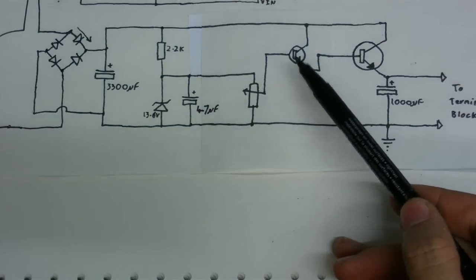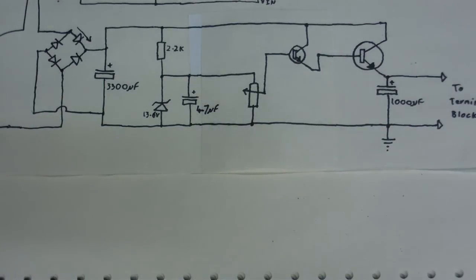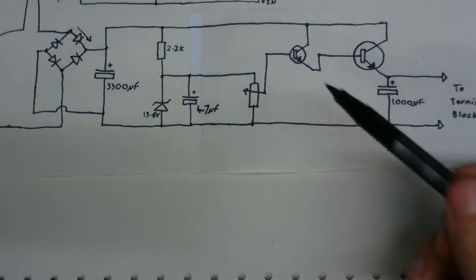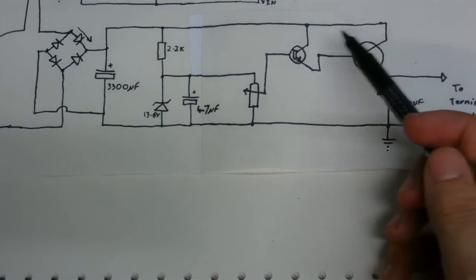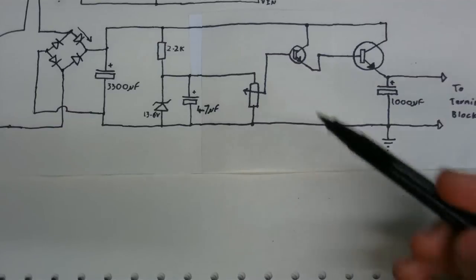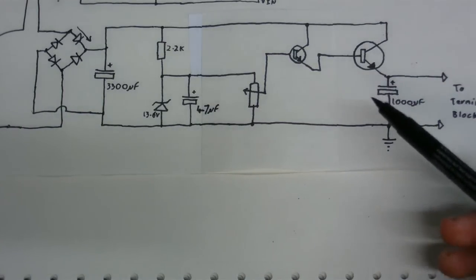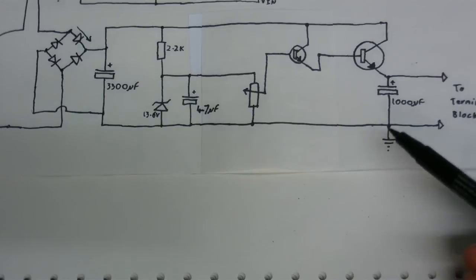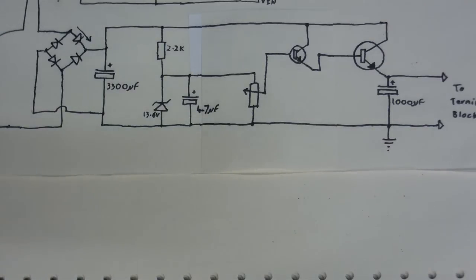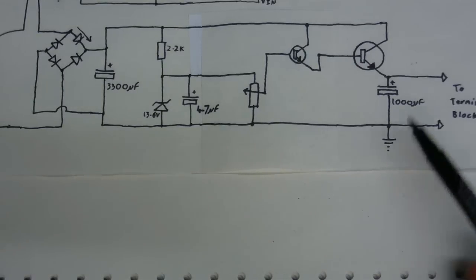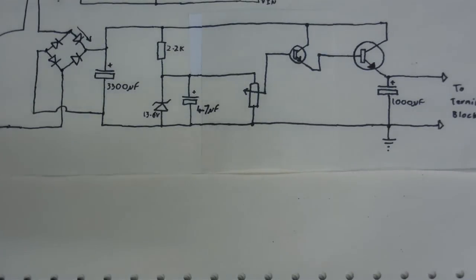I added a second transistor here, and that seemed to make it much more stable. So as you can see here, the two collectors are connected to the positive. Got the emitter there connected to the base. And obviously the emitter of the more powerful transistor connected to the capacitor to stabilize the circuit a bit more. And of course that powers the load. Now that seriously cut down on the amount of voltage drop there was when a load was connected.